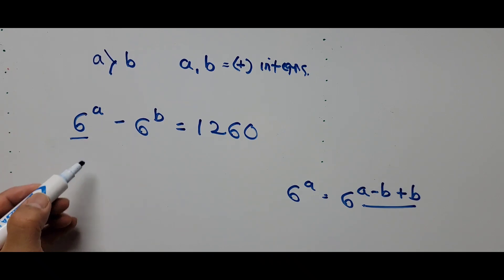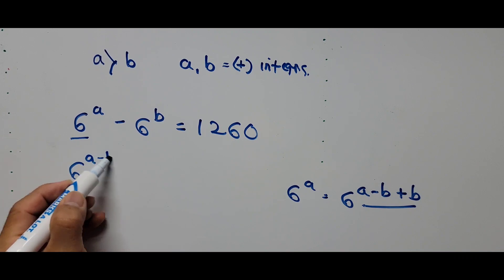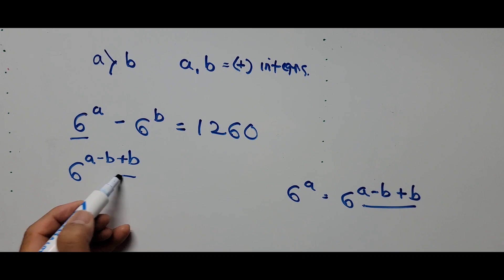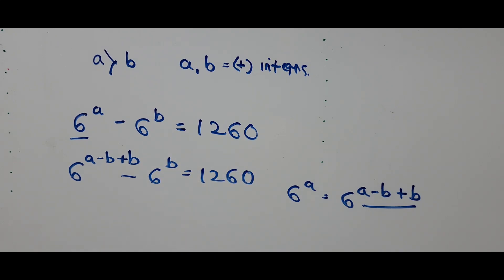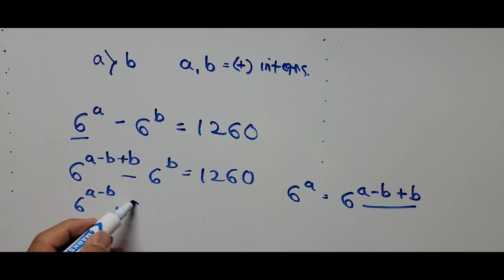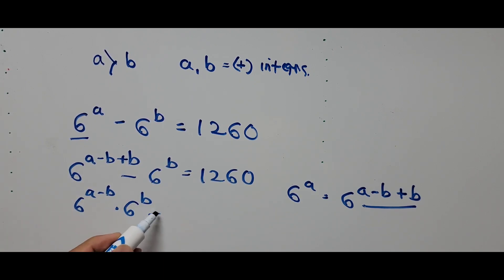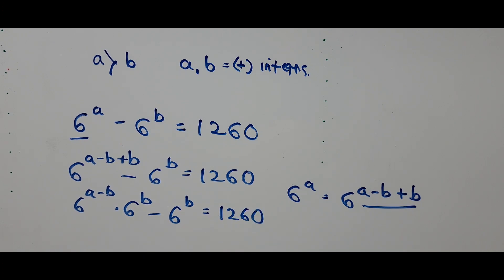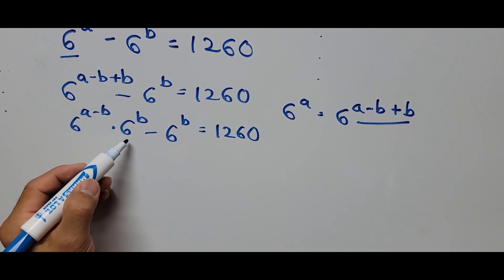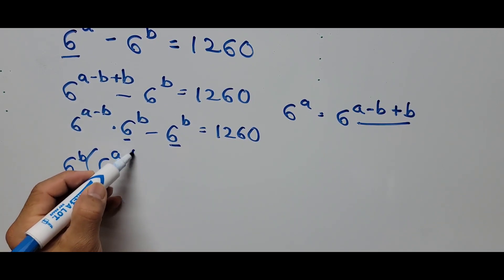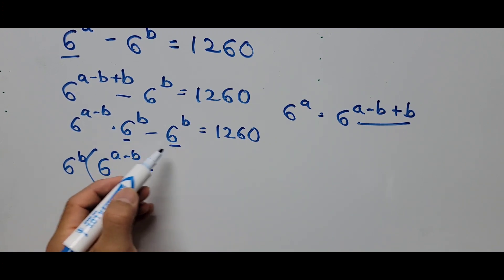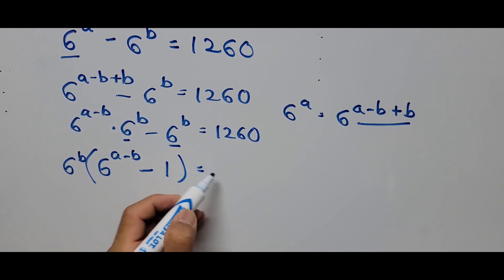So 6 to the power A is now equivalent to 6 to the power A minus B plus B, minus 6 to the power B, equals 1260. From here this can be written as 6 to the power A minus B times 6 to the power B, minus 6 to the power B equals 1260. We can factor out 6 to the power B, giving us 6 to the power B times the quantity 6 to the power A minus B minus 1 equals 1260.